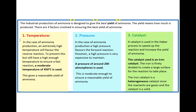We use an iron catalyst to speed up the reaction and increase the yield of ammonia. The iron used is finely divided so the particle size is very small, creating a large surface area for the reaction to take place. As the iron is a solid and the reactants are gases, we would call the catalyst heterogeneous — meaning the reactant and the catalyst are in different states. In summary, the best yield of ammonia requires a moderate temperature of 450 degrees centigrade, a pressure of around 200 atmospheres, and an iron catalyst.